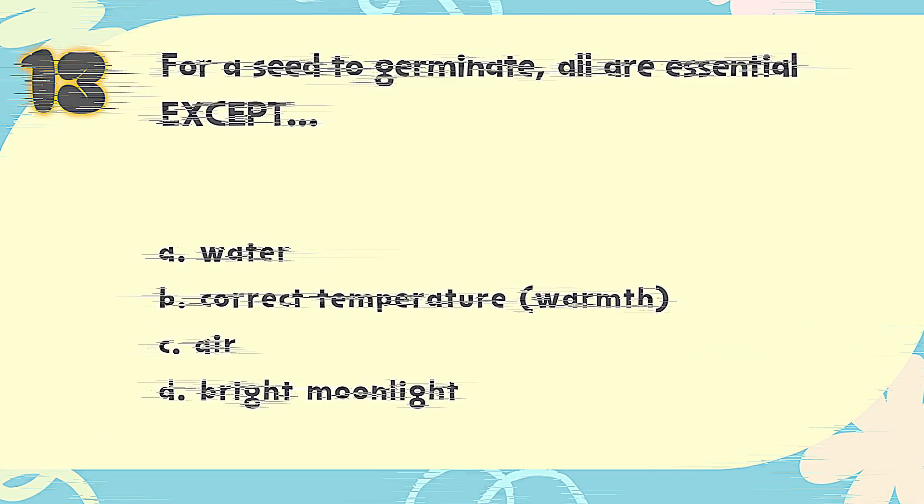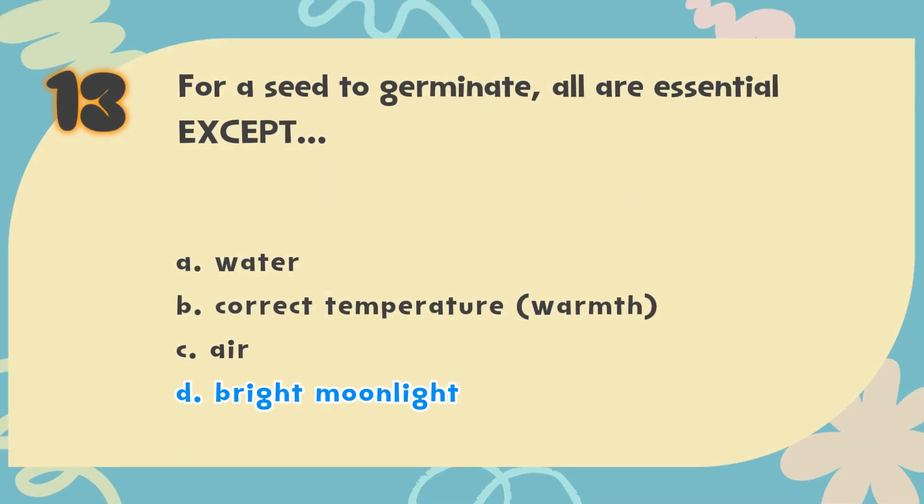The correct answer is D. Bright moonlight. A seed needs water, air (oxygen), and the right amount of warmth to sprout. It does not need light to start germinating and can even start underground.